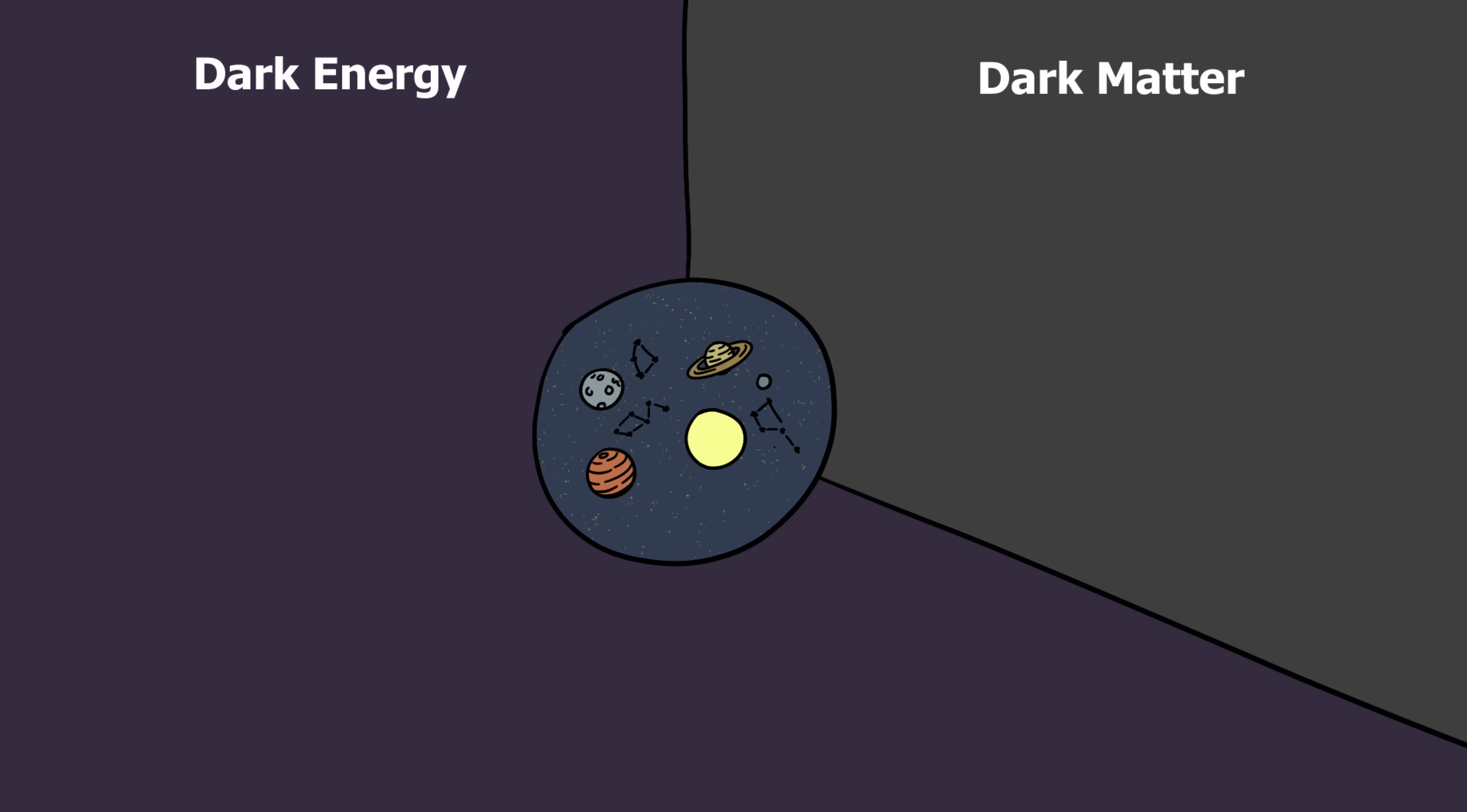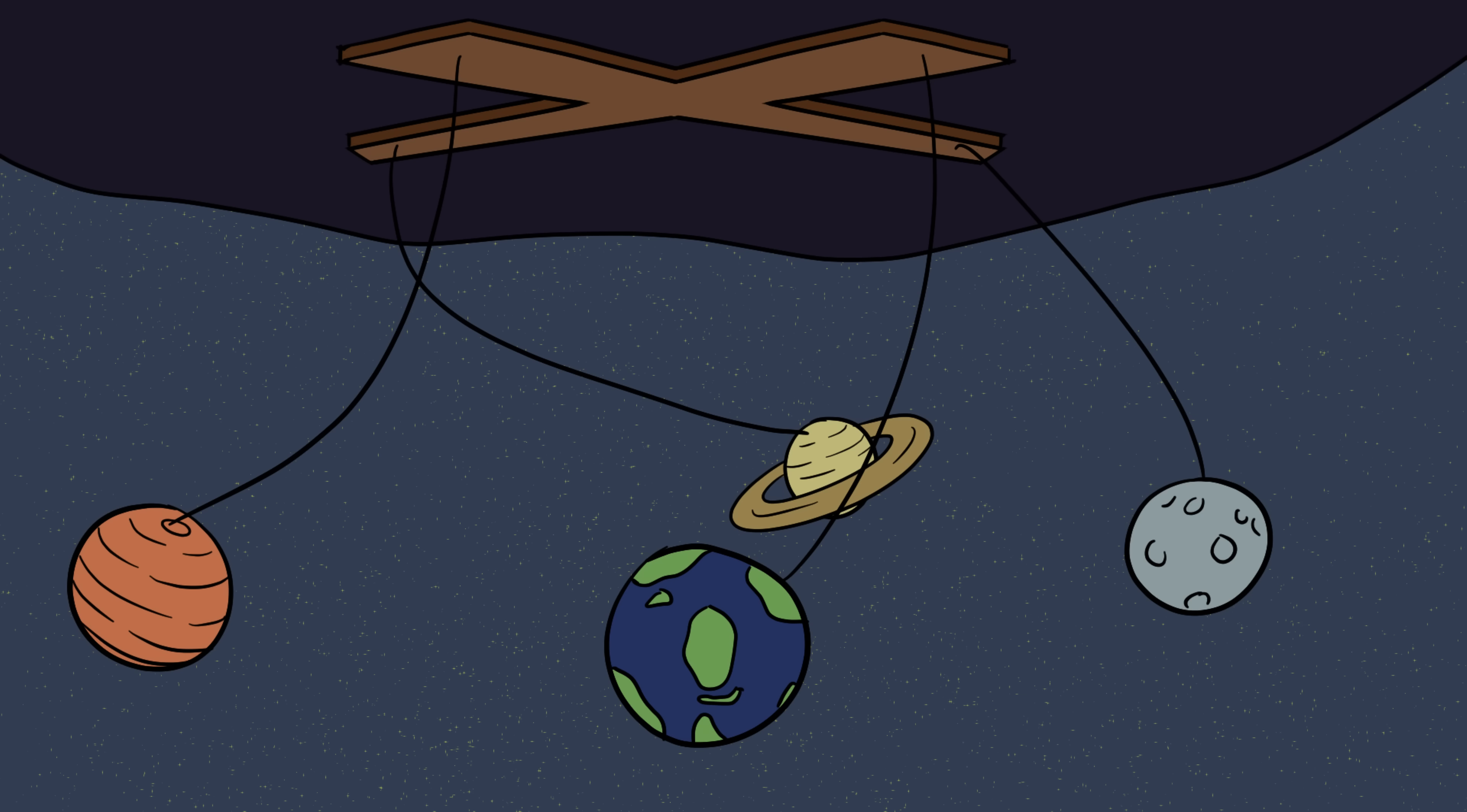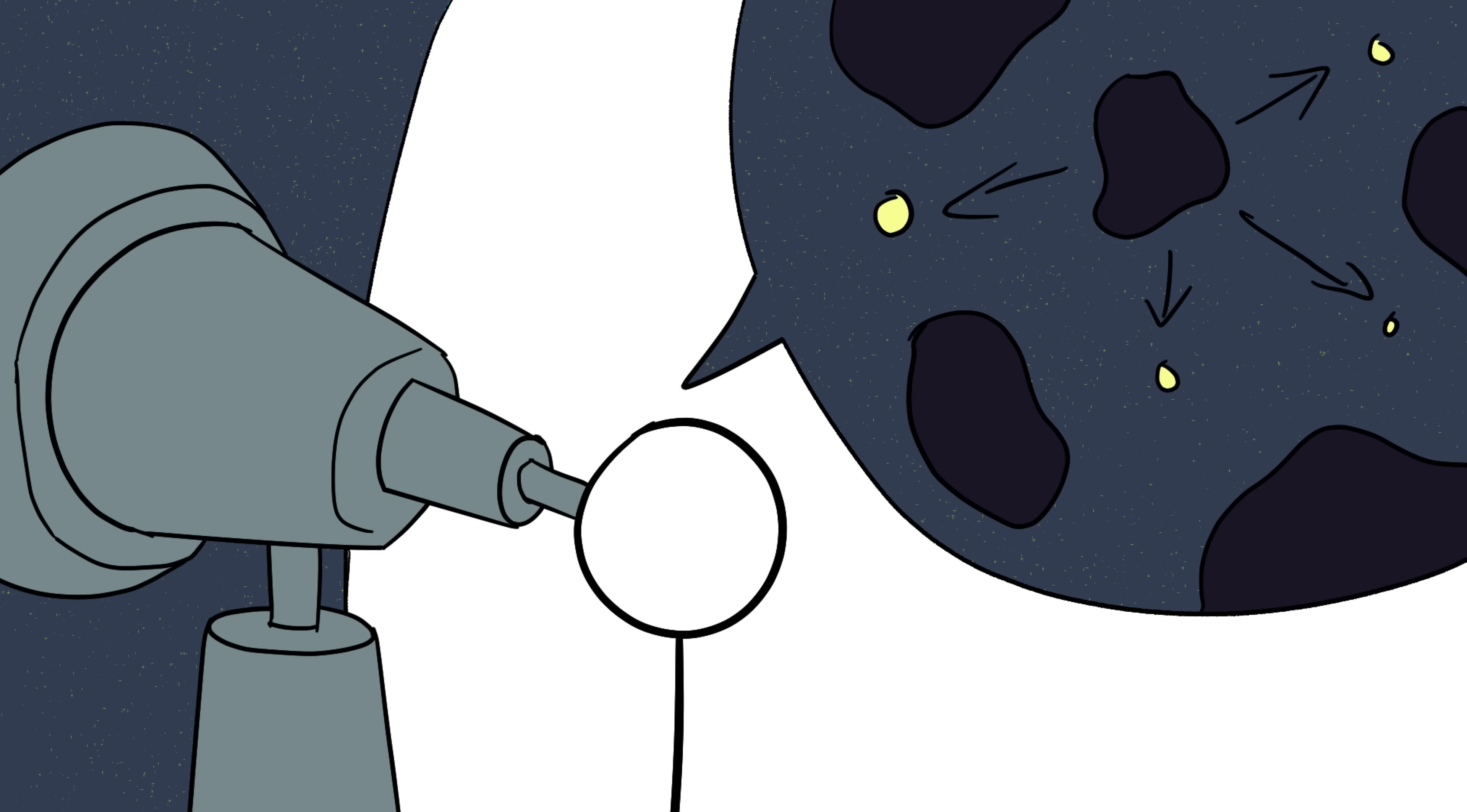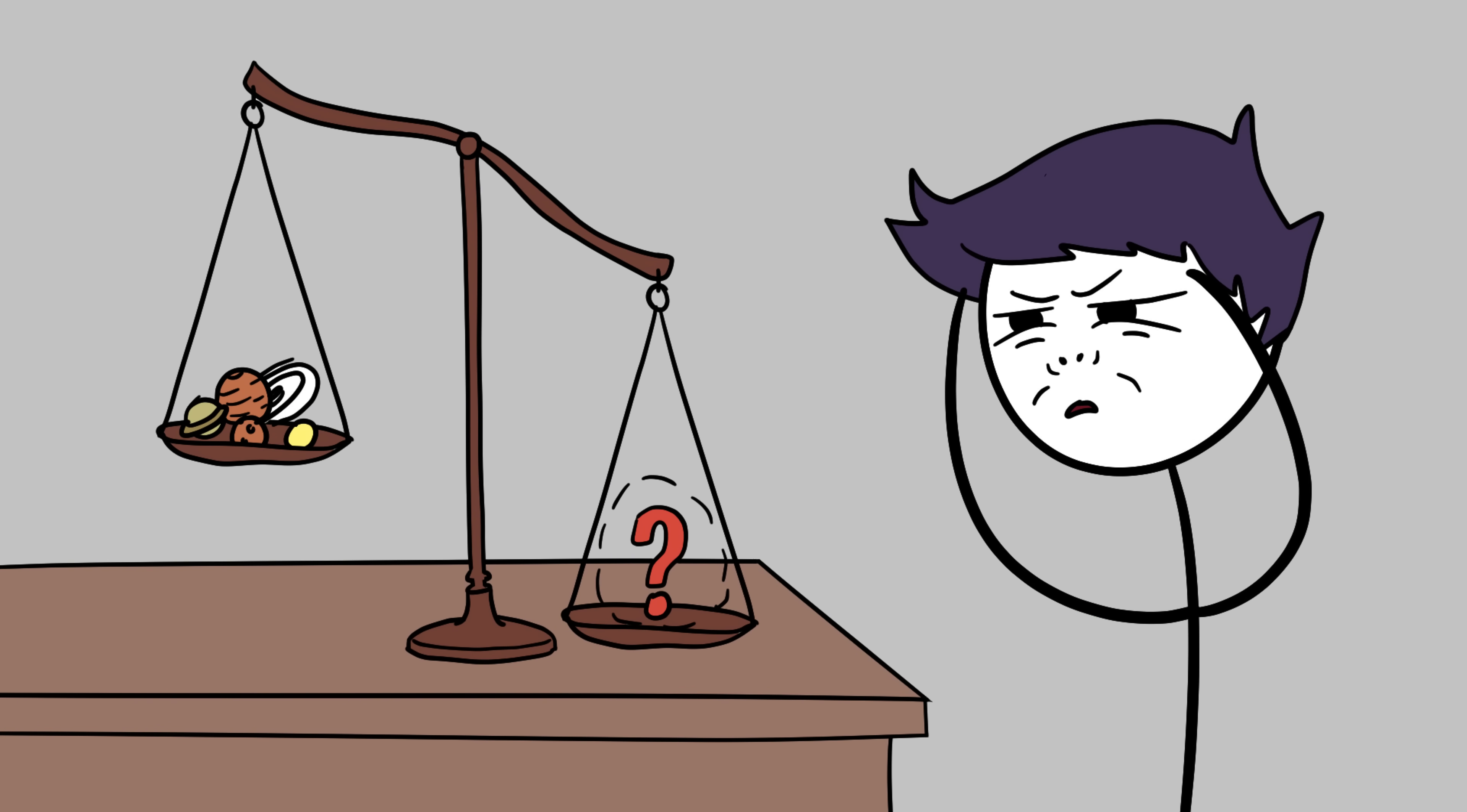Dark matter doesn't emit light, doesn't reflect it, doesn't interact with it. And yet, it exerts gravity. Without it, galaxies would fly apart like broken pinwheels. Scientists only discovered it in the 20th century when they realized stars on the edges of galaxies were moving way too fast. Something unseen was pulling them in, like an invisible glue. The math didn't add up without an enormous hidden source of mass. That invisible mass became known as dark matter.